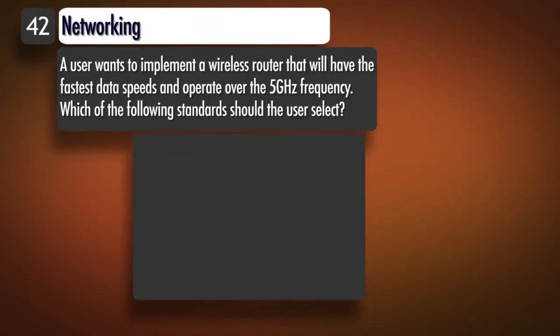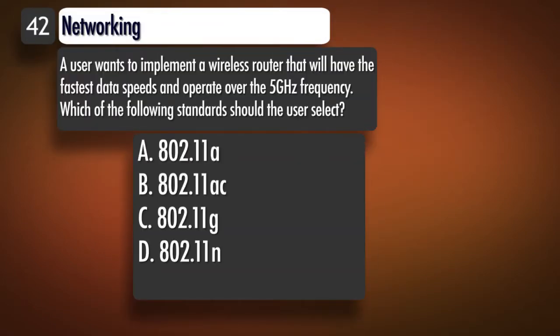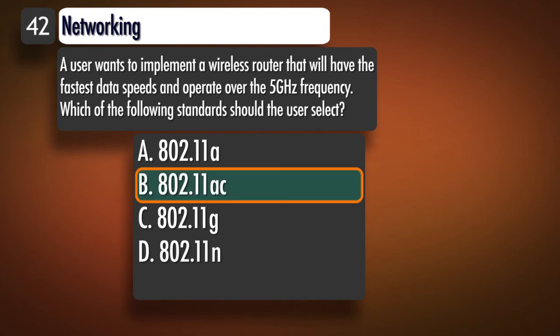Question 42, Topic 2. A user wants to implement a wireless router that will have the fastest data speeds and operate over the 5 GHz frequency. Which of the following standards should the user select? A. 802.11 A B. 802.11 AC C. 802.11 G D. 802.11 N. Correct answer: B.